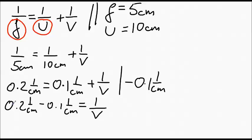Now you can just calculate what's 0.2 minus 0.1. That's going to give you 0.1, unit 1 over centimeters, equals 1 over V. Done.